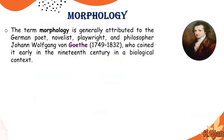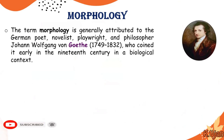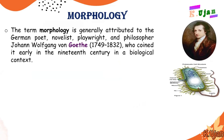The term morphology is generally attributed to the German poet, novelist, playwright, and philosopher Johann Wolfgang von Goethe (1749–1832), who coined it clearly in the 19th century in a biological context. Goethe is the person who actually coined this word, and this was the very first use of morphology — in biology.